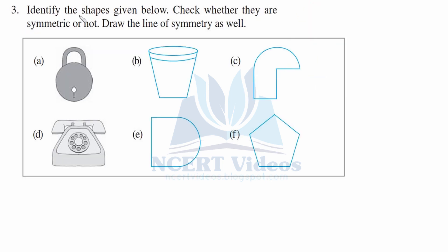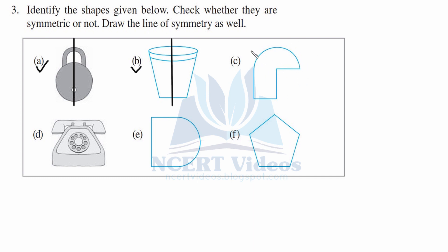Question 3: Identify the shapes given below, check whether they are symmetrical or not, and draw the line of symmetry. Part A is a lock — it is symmetrical because if we draw a vertical line of symmetry straight through the center we get the other part. Part B is a bucket — it is also symmetrical when we place a vertical line of symmetry through the center to get the other part.